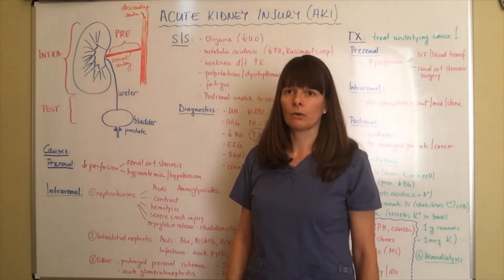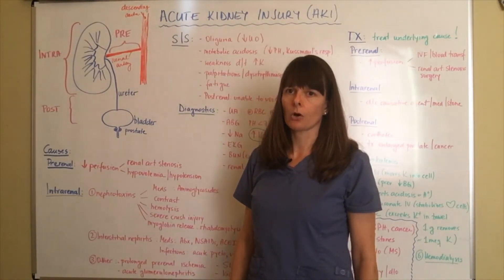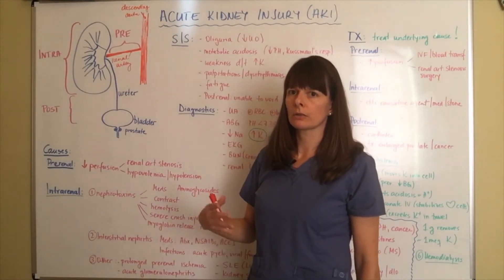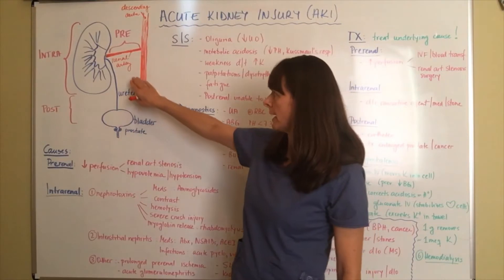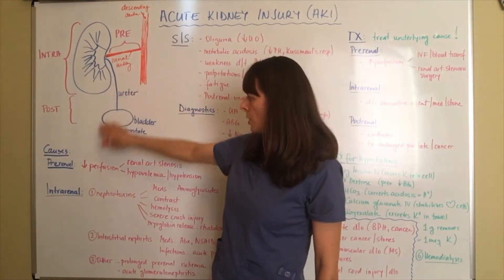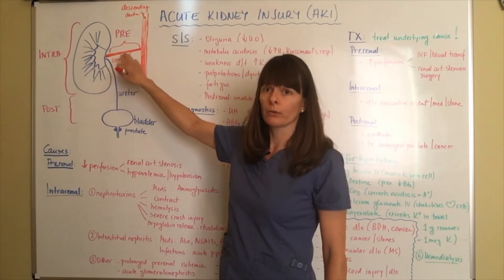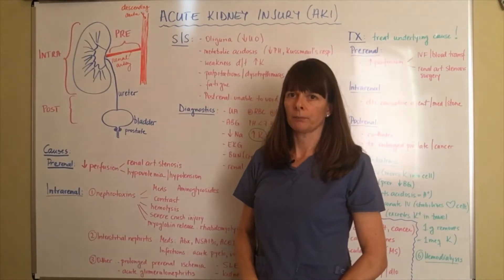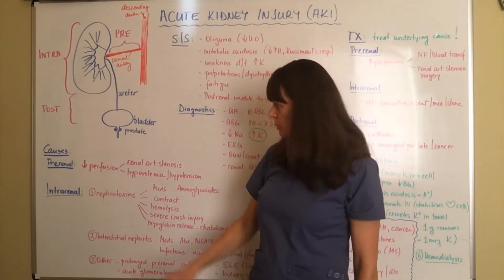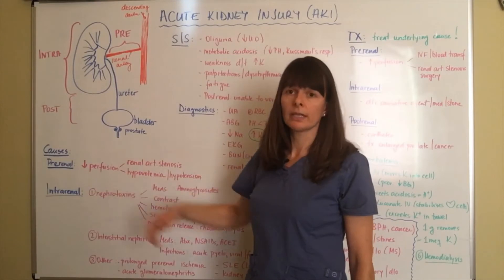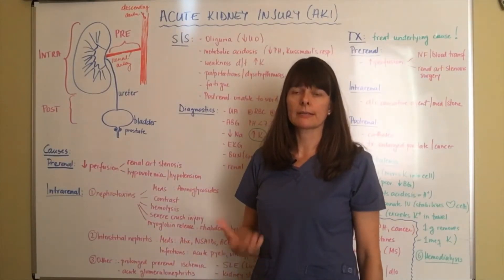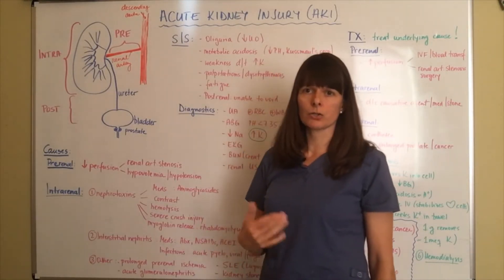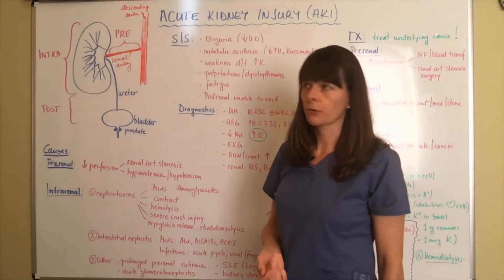In pre-renal kidney injury, the damage occurs before the kidney — pre-renal — so the only thing that comes before it is the renal artery. The number one cause is decreased perfusion. When the kidney, like any organ, doesn't get enough blood flow, it is unable to function properly, and therefore it can cause kidney injury and lead to further damage.